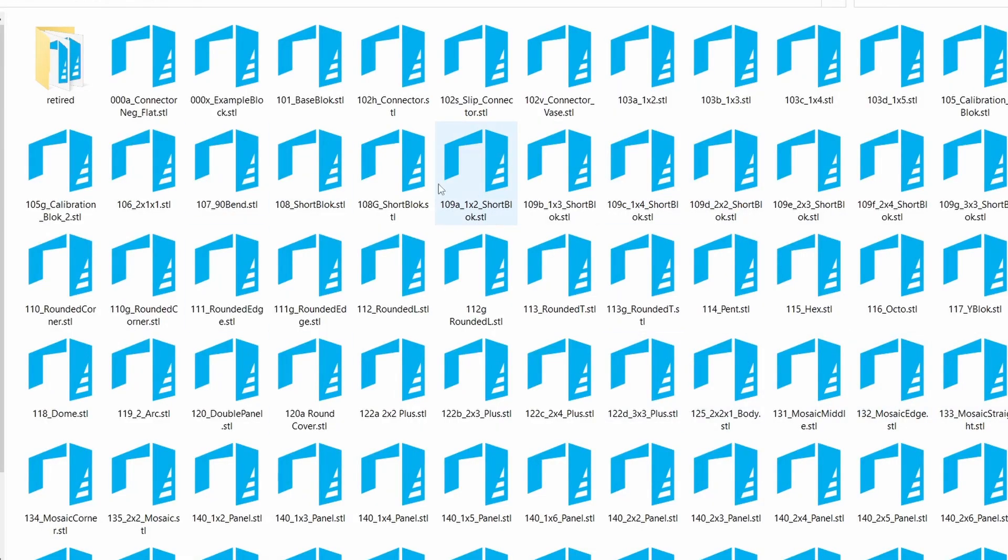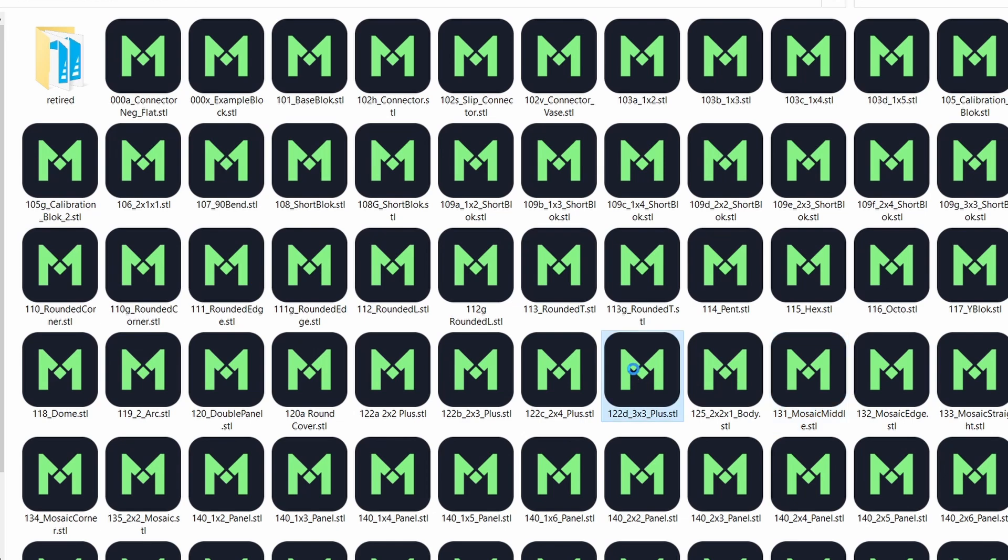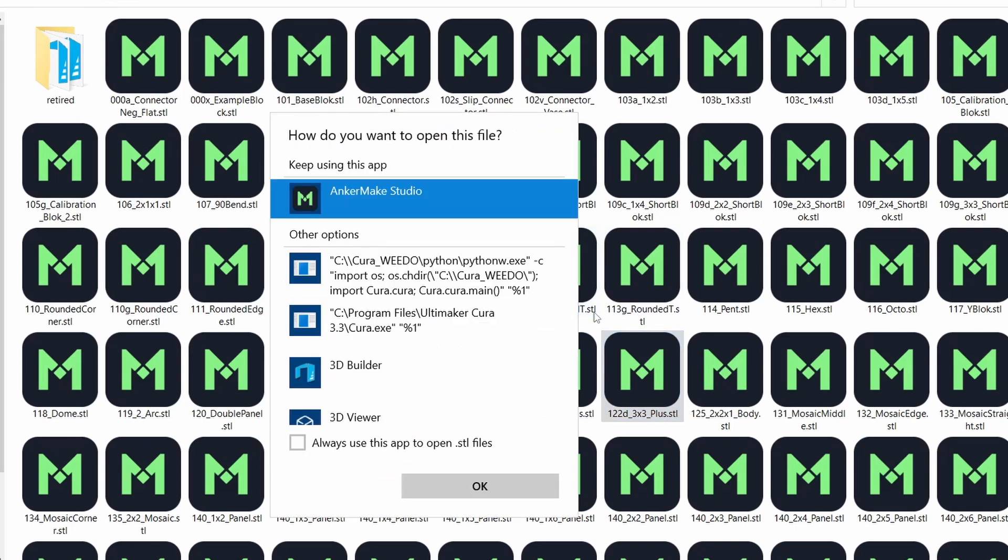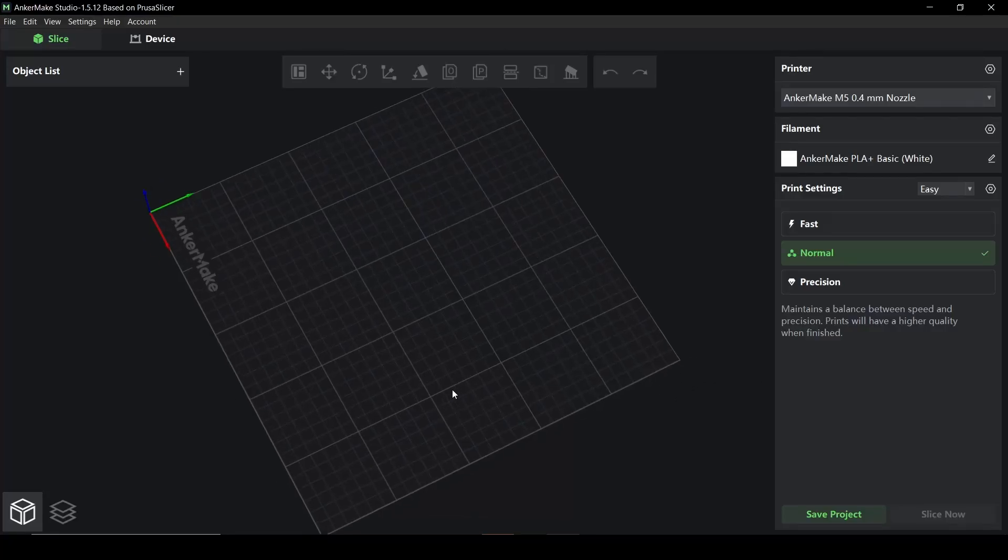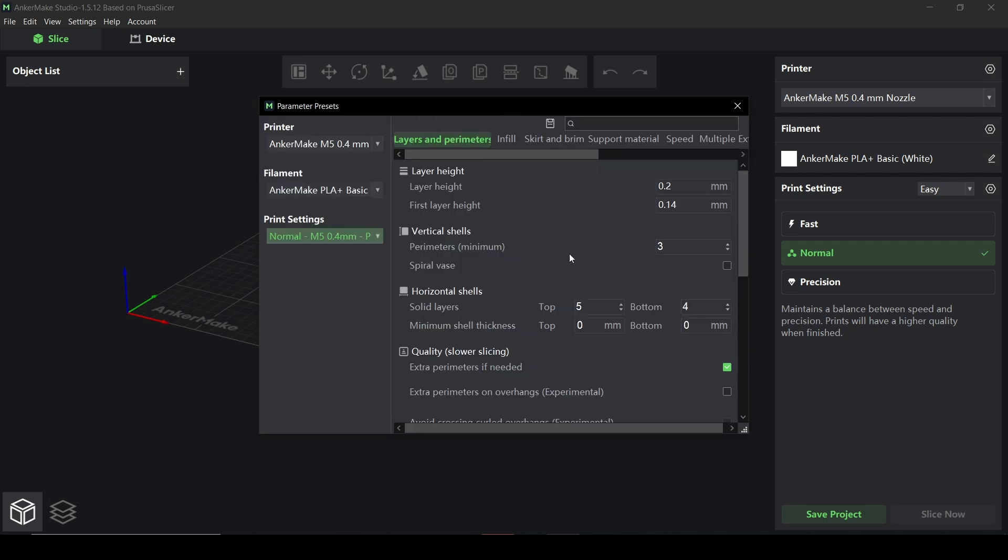And speaking of annoyances, their AnkerMake Studio on your computer takes over STLs as the default. It becomes the default application for STLs. Now that might work if this is your only 3D printer, if this is your first 3D printer. But I don't want my STLs going to the AnkerMake Studio. In fact, I like them to go to 3D Builder because I'm creating STLs all the time. But every time I launched their app, it took over STLs. Now I did contact them and said, hey guys, where's the setting to turn this off? And they're like, oh yeah, we don't have one.